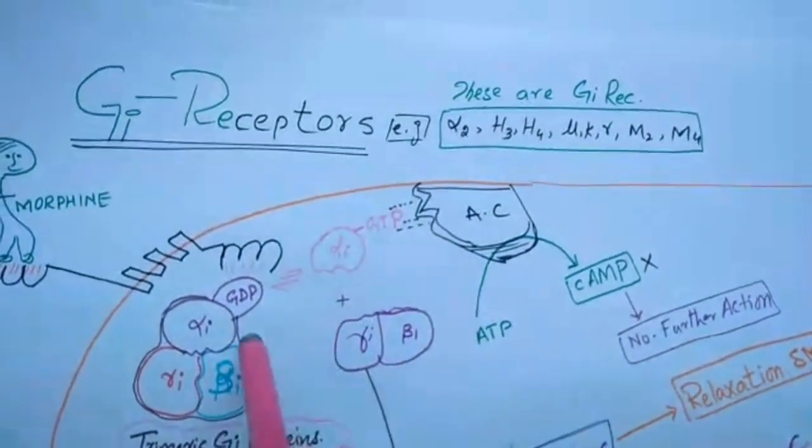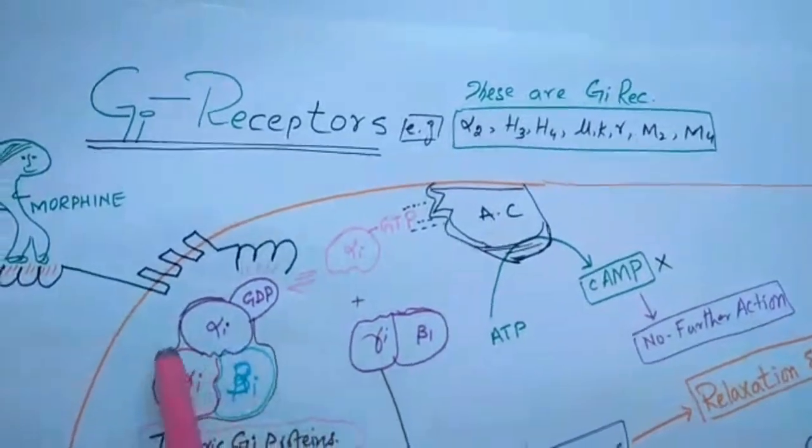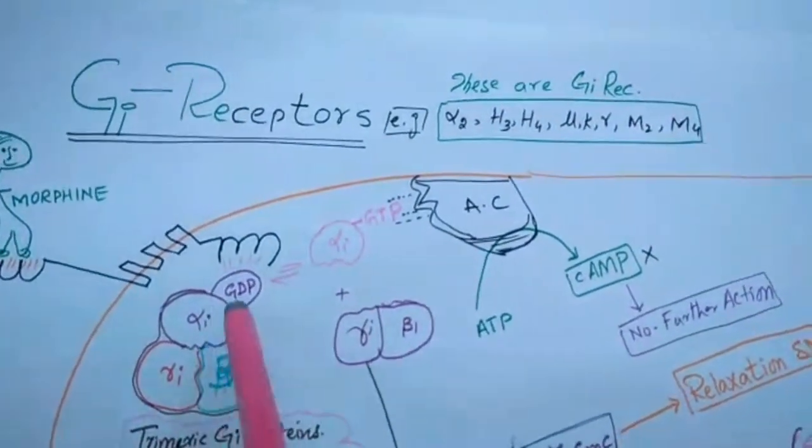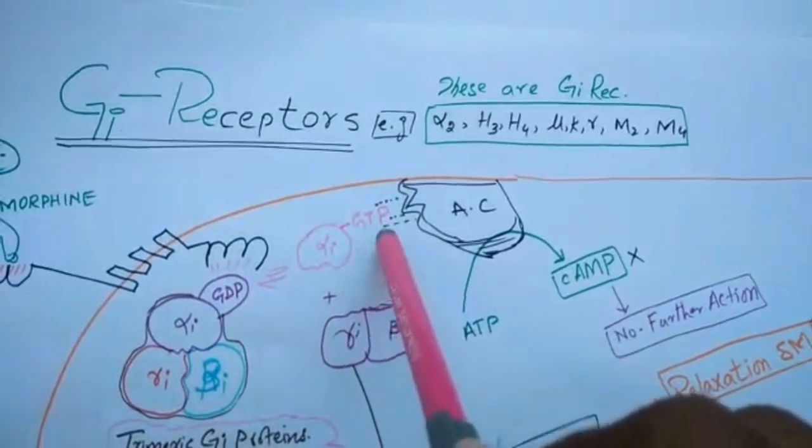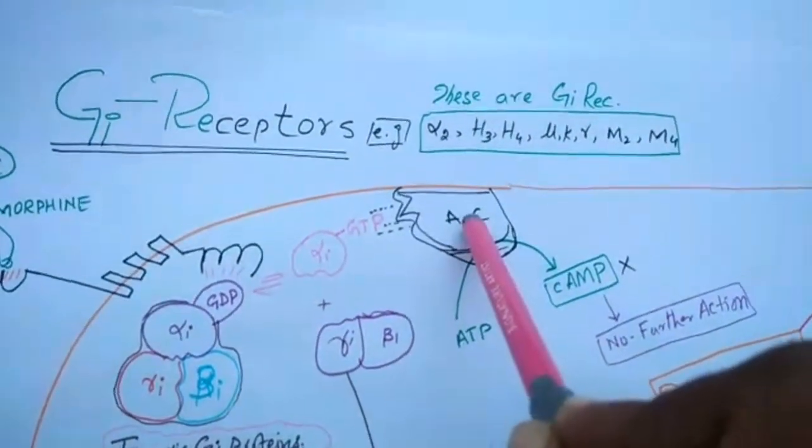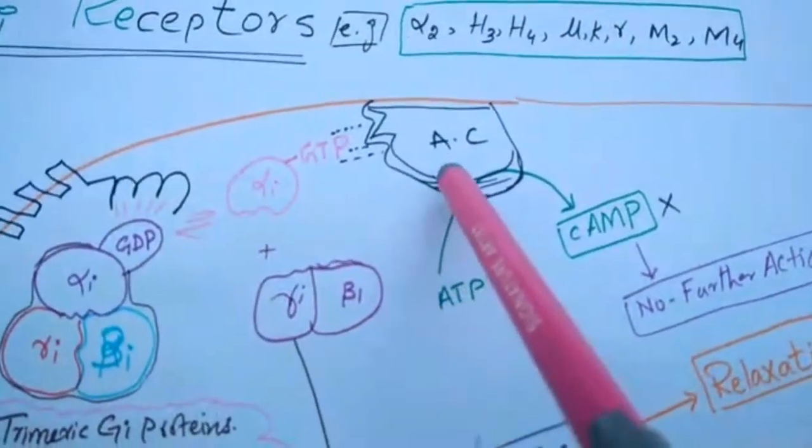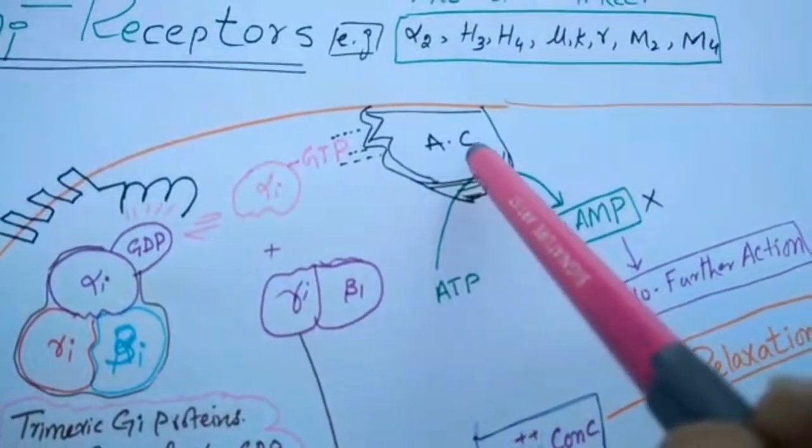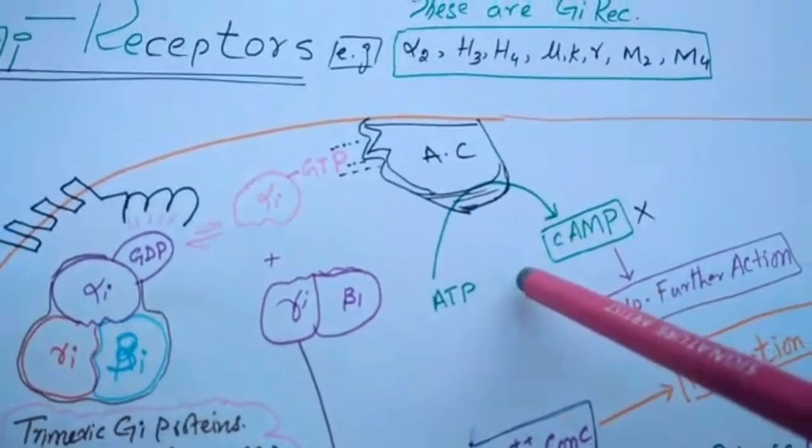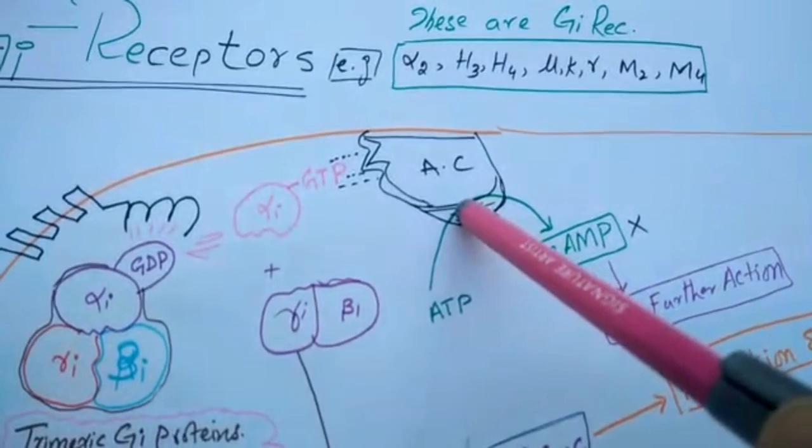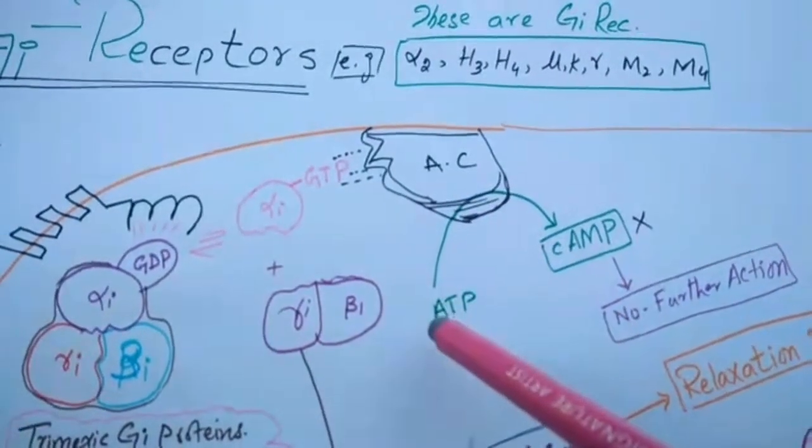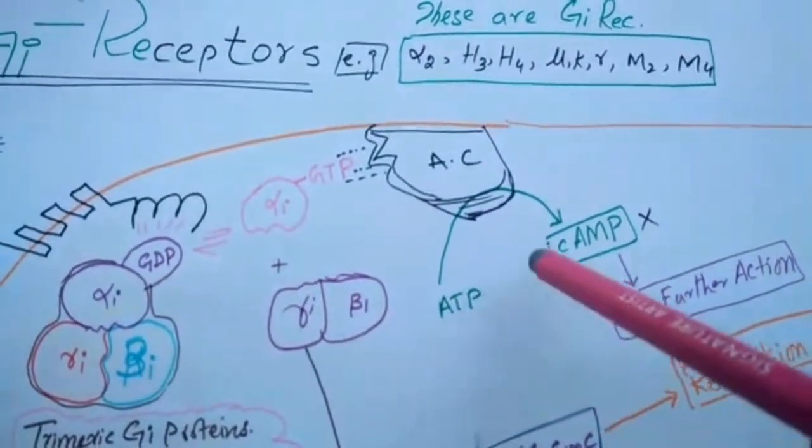When alpha-i GTP stimulates AC, the conformation of this adenylyl cyclase changes in such a way that it cannot convert ATP into cAMP.